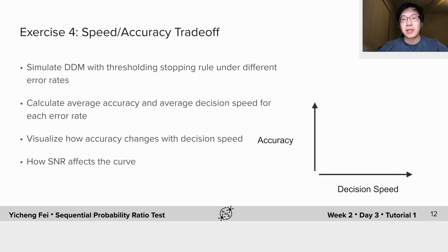Let's now look at the speed accuracy trade-off under thresholding stopping rule. To do this, run multiple simulations for each error rate alpha, and calculate the average decision accuracy and average decision speed for each given alpha. The decision speed is just the reciprocal of decision time for one simulation.